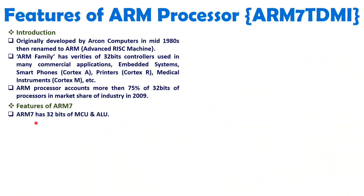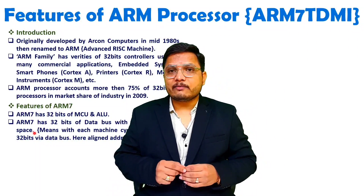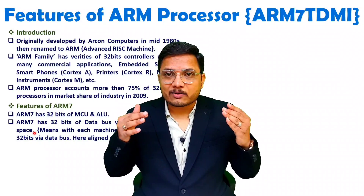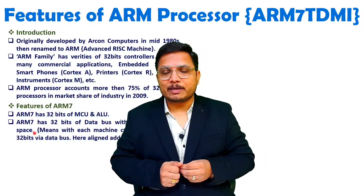With ARM7, it has a 32-bit MCU and ALU, so the arithmetic and logic unit performs 32-bit operations. ARM7 also has a 32-bit data bus with aligned memory space. Let us try to understand what 32-bit data means and how it relates to aligned memory space.